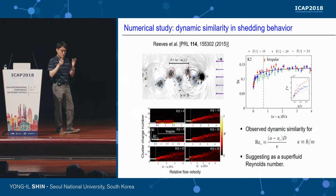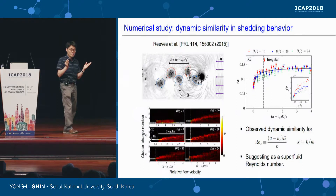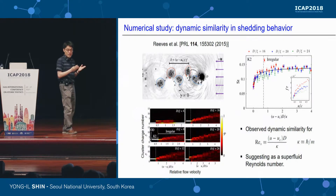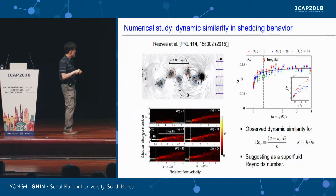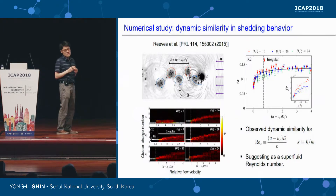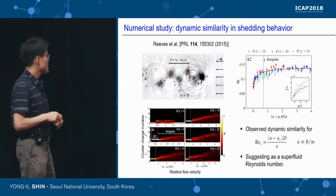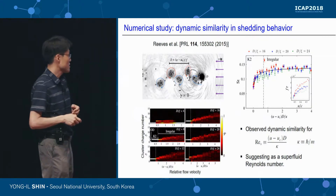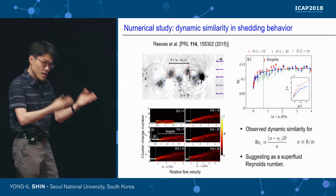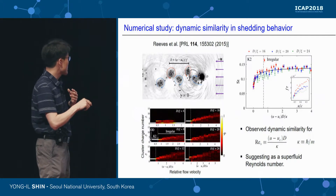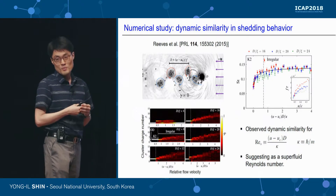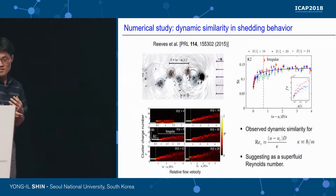They also analyzed the Strouhal numbers for their numerical data and found a remarkable result. When they plot the Strouhal number as a function of a new parameter — (V minus V_C) times d over kappa, where V_C is the critical velocity for vortex shedding and kappa = ℏ/m — all data collapses onto one universal line, closely resembling the classical fluid result. From this dynamic similarity in shedding behavior, they proposed this parameter as a superfluid Reynolds number in terms of vortex shedding behavior.